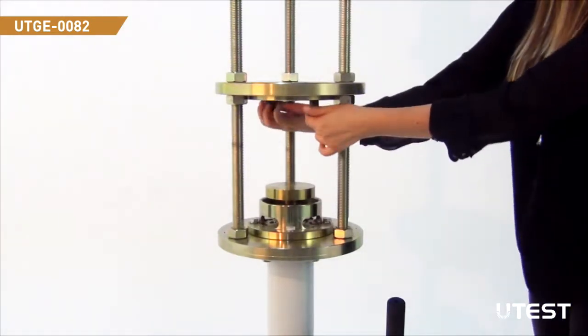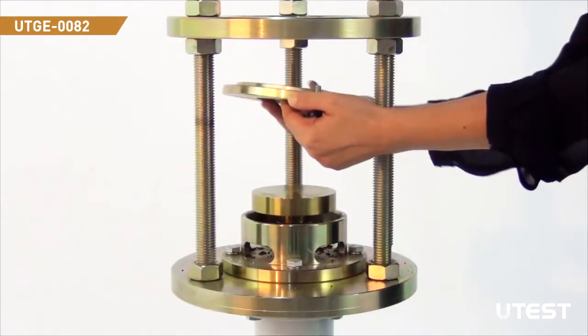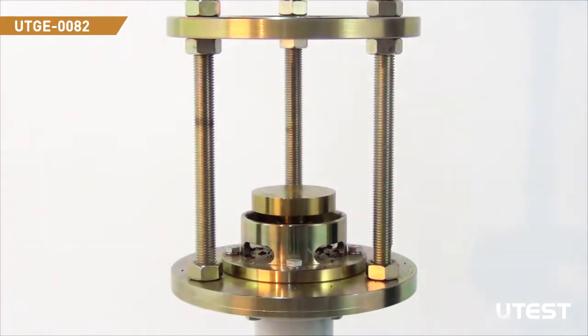To extrude six-inch samples, remove four-inch flange and change the extruding head.